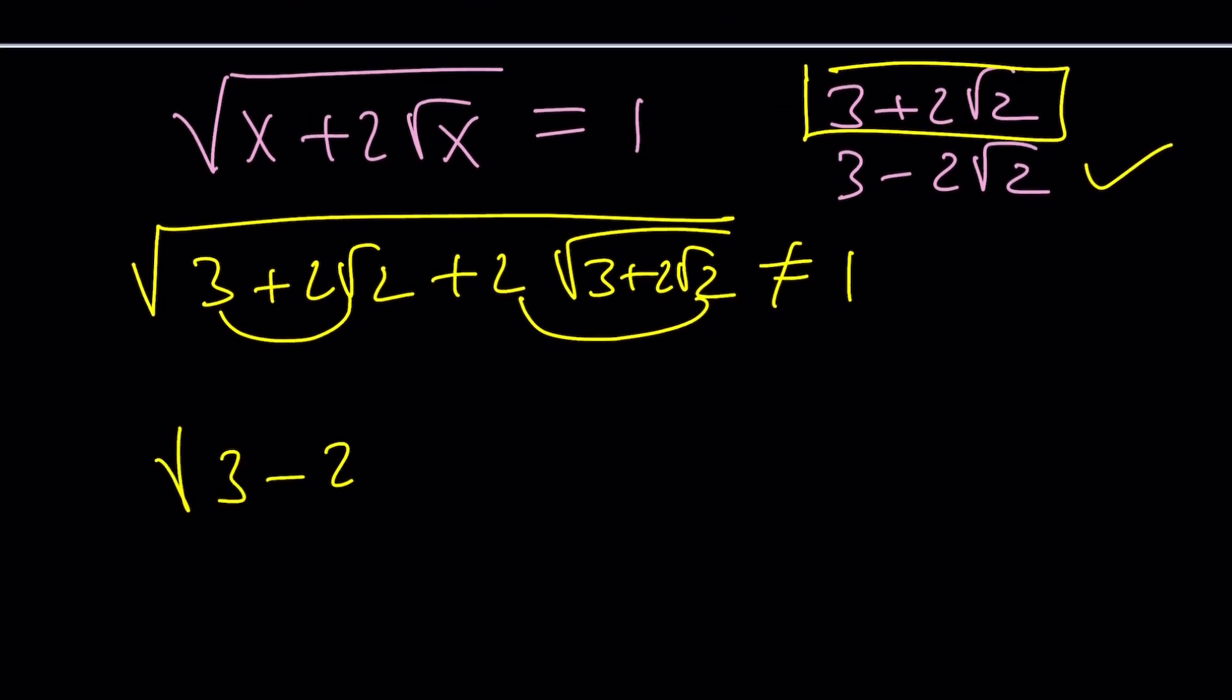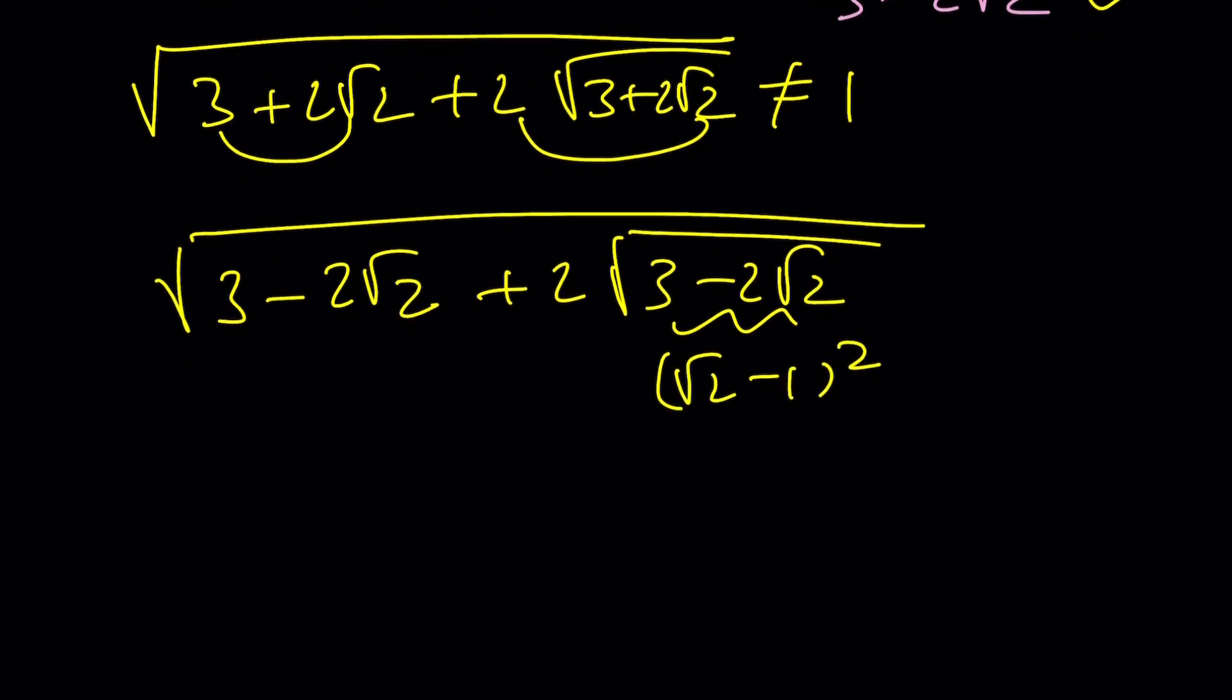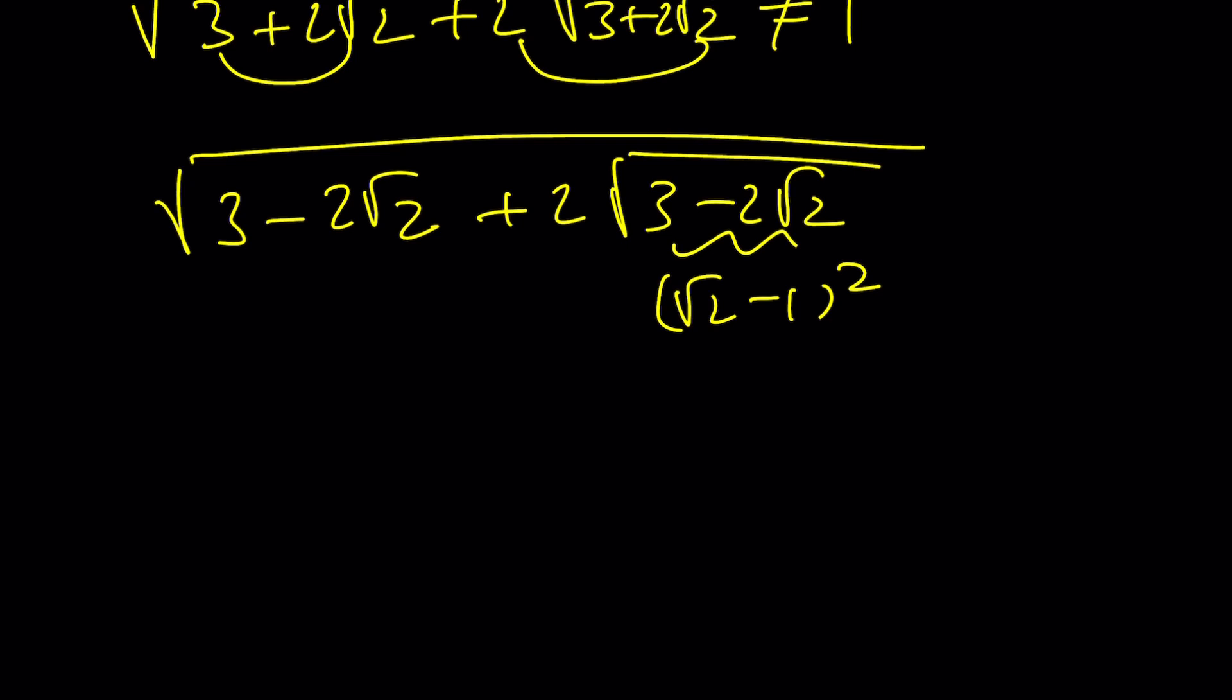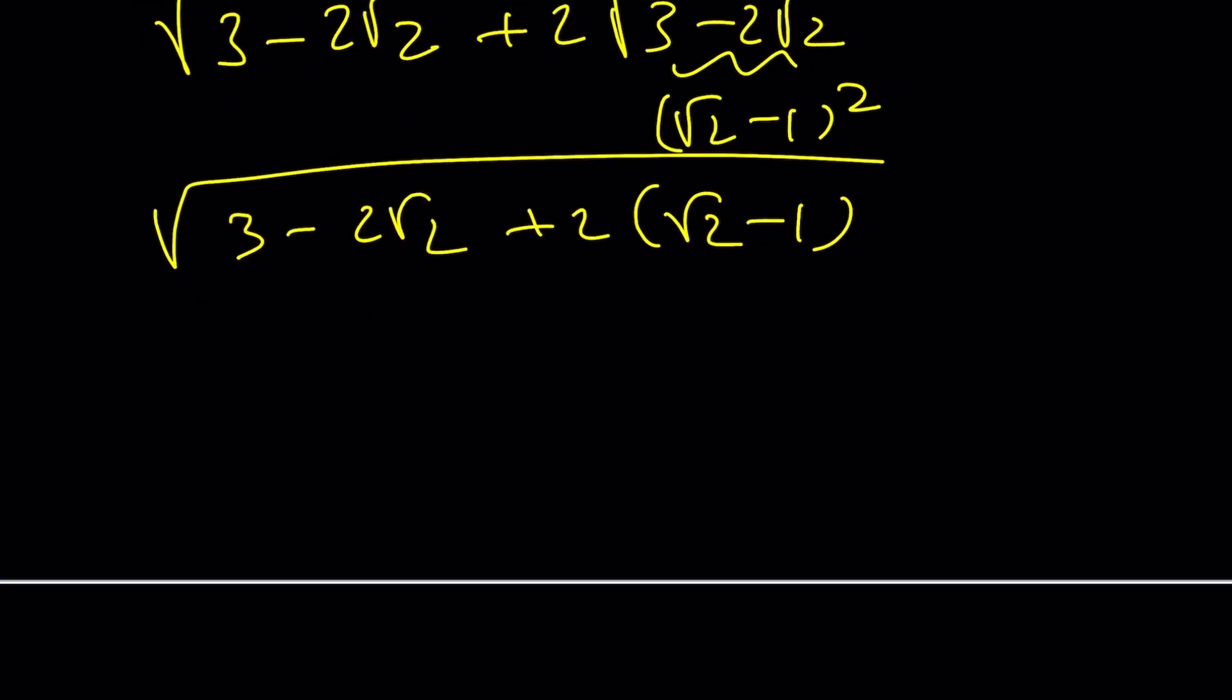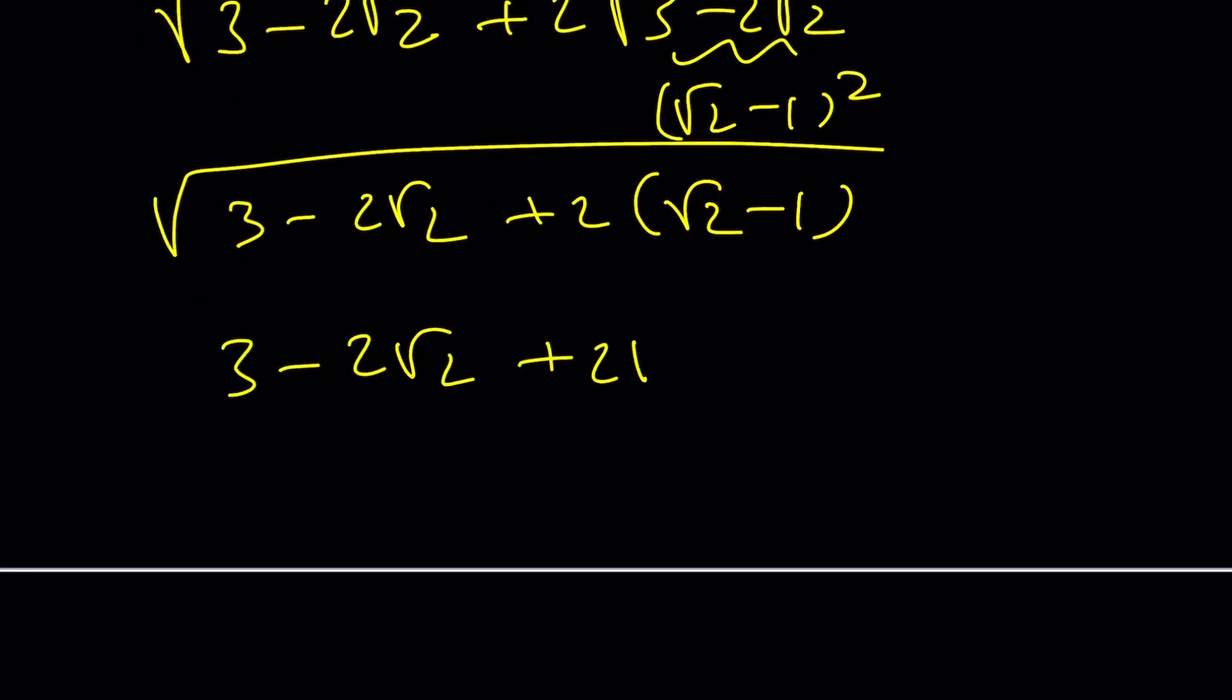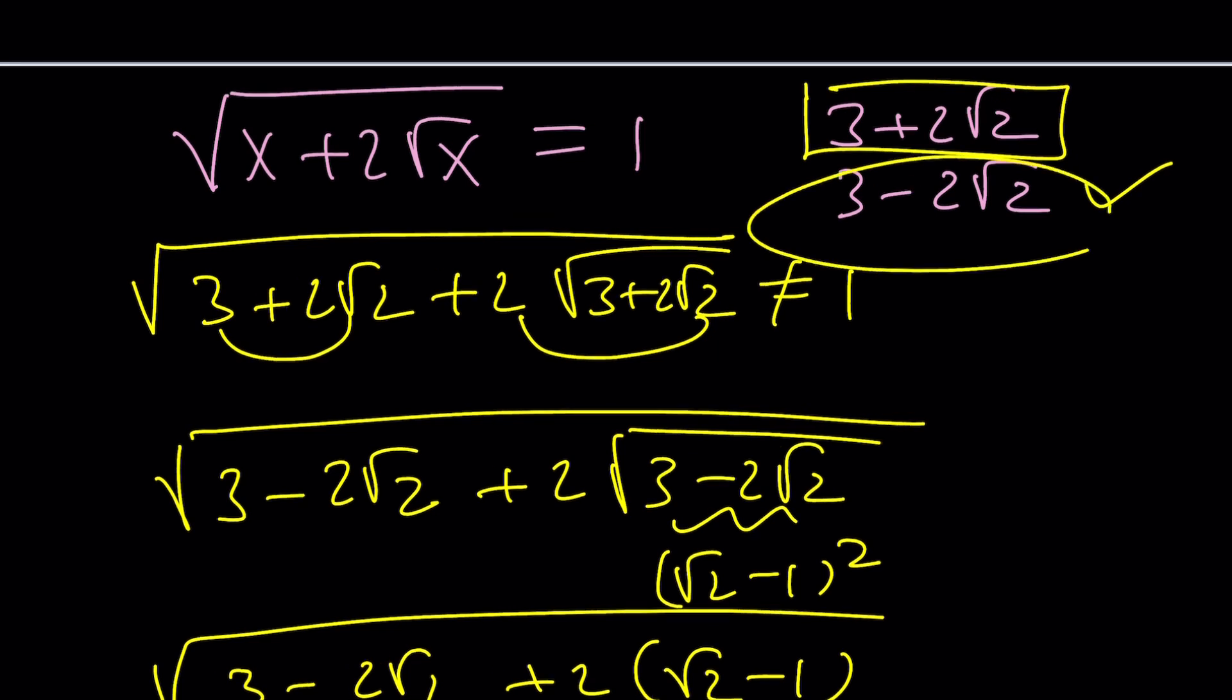But then what about the second one? We still need to test, because a radical equation can have no solutions. But this one does. Because what happens is, this is a perfect square. By the way, this is root 2 minus 1 squared. So when you square root and take the positive root, it's going to be root 2 minus 1. When you distribute and square root 3 minus 2 root 2 plus 2 root 2 minus 2, these two cancel out, square root of 1, that's equal to 1. So yes, that satisfies the equation. Therefore, this is a good solution.